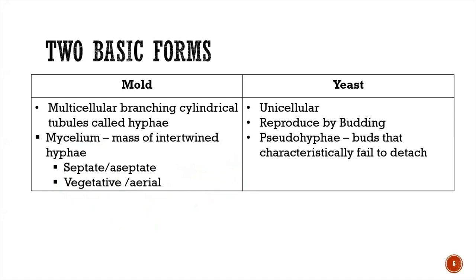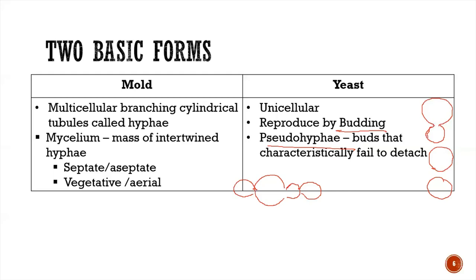Yeasts are the unicellular forms, produced by budding, wherein a mother cell pinches slowly to produce a daughter cell, which eventually separates from the mother cell producing two separate cells. Sometimes a mother cell fails to detach completely from its daughter cell, and then budding occurs again with another failure of detachment.